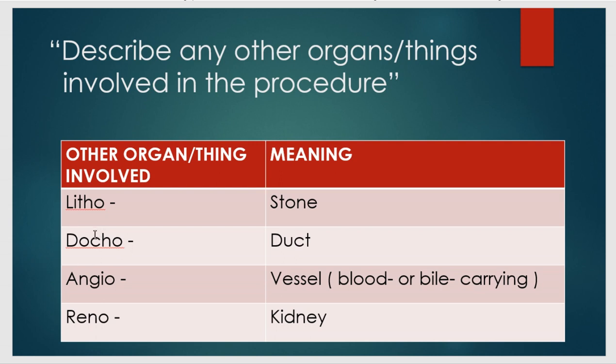Similarly, DOCHO (D-O-C-H-O) means related to a duct. For example, choledocholithotomy means opening up the bile duct — here we use DOCHO as the second term. ANGIO means anything related to a vessel, whether blood-carrying or bile-carrying. RENO is also related to the kidney. These are examples of the second point: any other organ or associated structure involved in the procedure.